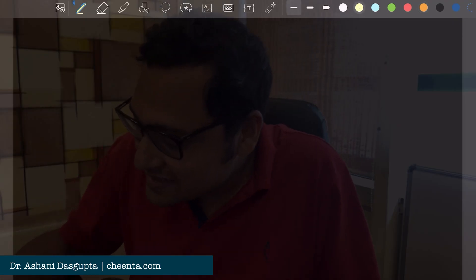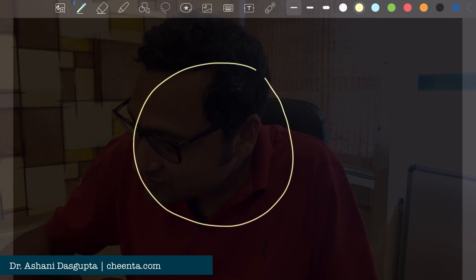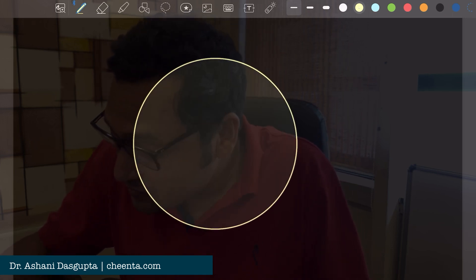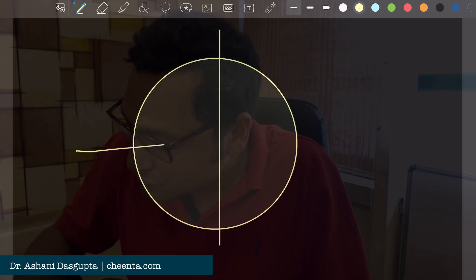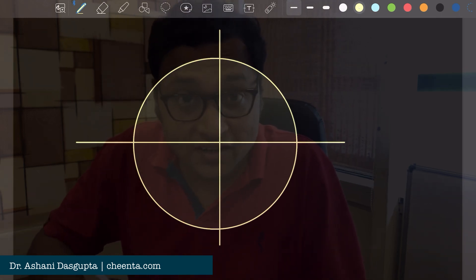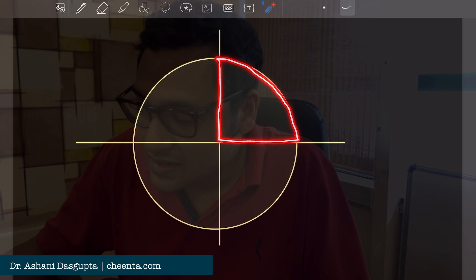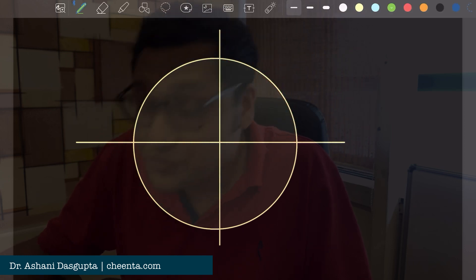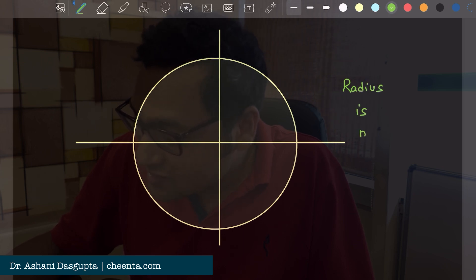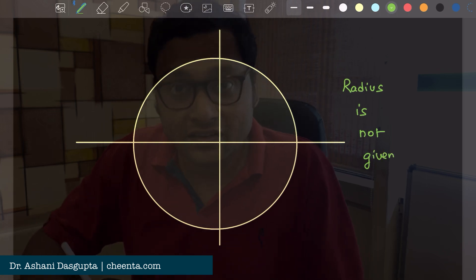The problem says that there is a circle. Actually, they will be using a quarter of a circle. So you divide the circle into two and then four parts, and they are only focusing on this quarter of the circle. And interestingly, the radius of the circle is not given.